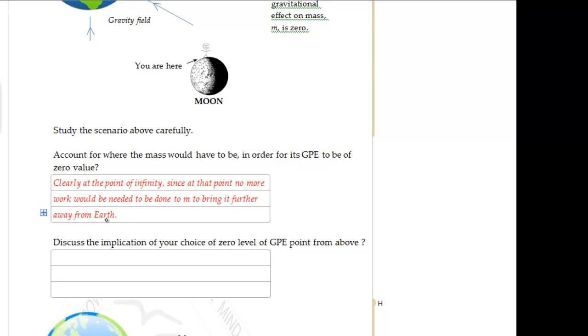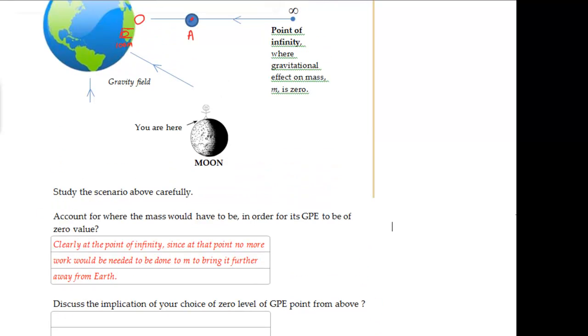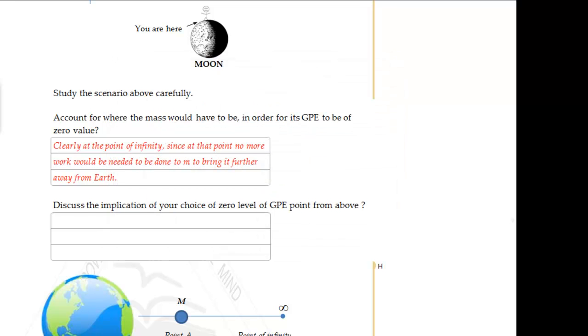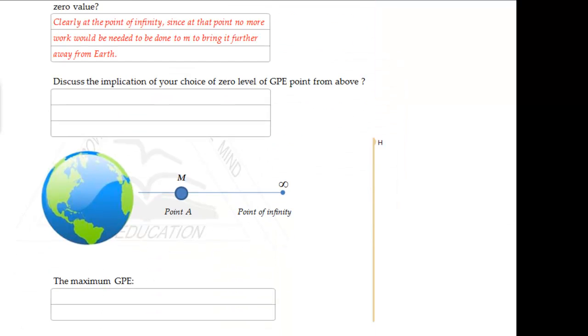It's a bit hard to grasp I know, but it's quite simple really. The point of infinity is the point where there is no more effect due to the gravitational field on the mass. So therefore there is no more storage of energy by the gravitational system. Okay. I hope you got that.